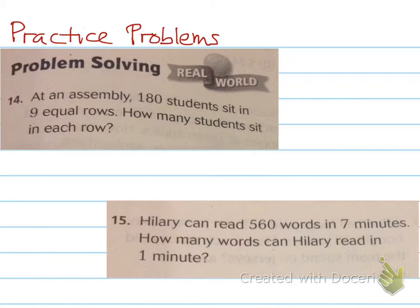At an assembly, 180 students sit in nine equal rows. How many students sit in each row? And then the second one. Hillary can read 560 words in seven minutes. How many words can Hillary read in one minute? All right? See you tomorrow.